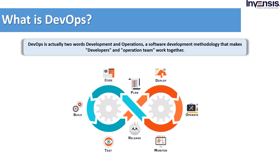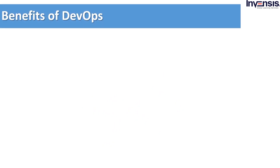Let us focus on the image for a bit to understand more about DevOps. It is nothing but an infinite loop. Everything happens continuously in DevOps — it starts from coding, testing, deployment, and monitoring. Everything is happening continuously. Before moving on to the lifecycle, let's look into some benefits that DevOps provides.